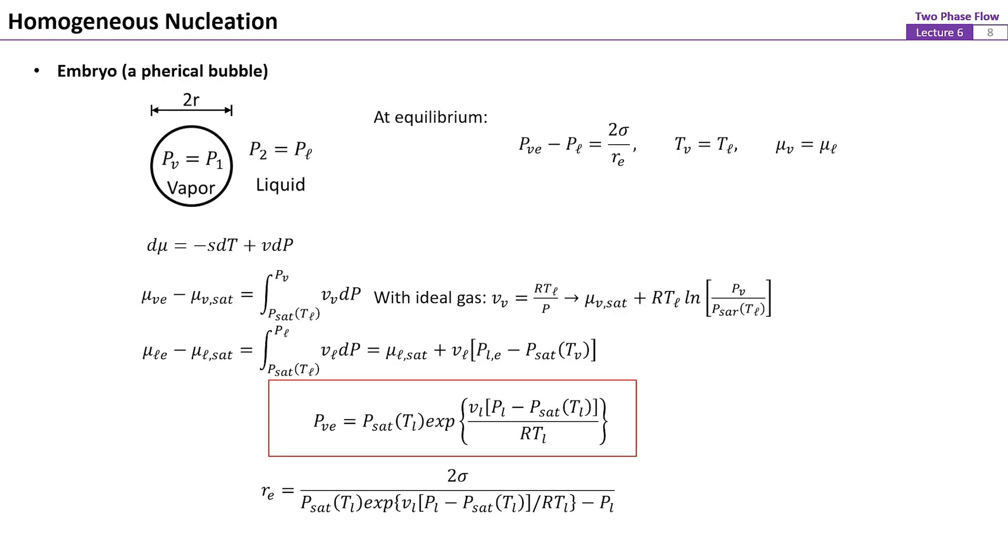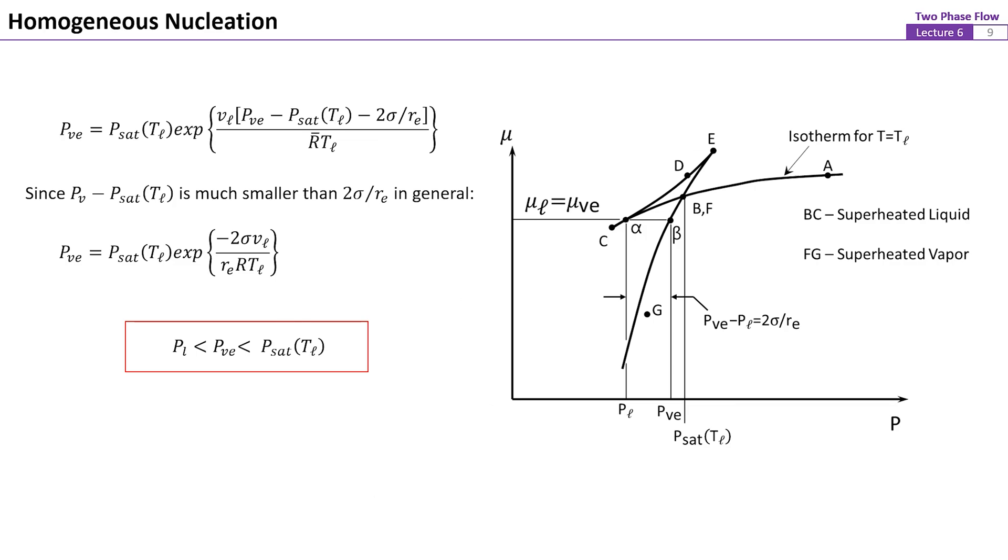Note that since PL is less than PSAT at TL, for a superheated liquid, PV must be less than PSAT according to this equation inside the red box. By using the Yang-Laplace equation, an equation for Re may be derived. Rearranging these equations, the pressure of the vapor bubble can be derived. In addition, since in most cases, PV minus PSAT is much smaller than 2σ over RE, the equation can be further simplified with approximation. It is concluded that PVE must be less than PSAT.